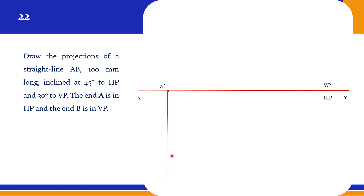From A dash, you just draw a thin line. Somewhere on this projector, you are going to get point A. Another end B is in VP, so when B is in VP, in the top view you can see it on the XY reference line. The drafter plays a major role here — you set the drafter at 30 degrees to VP, that is, 30 degrees to the XY reference line.